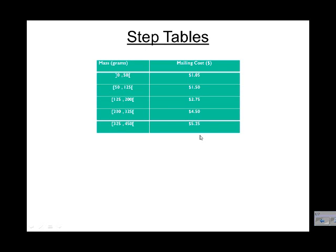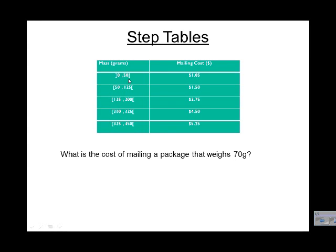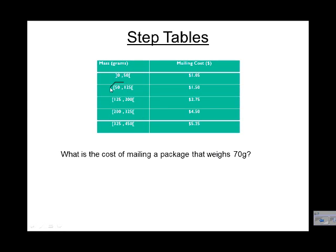Let's take a look at a table now. So again, what we notice in the table is rather than having singular values, we're having values that indicate a range or intervals. So what's the cost of mailing a package that weighs 70 grams? Well, if we look over here, we actually don't see 70 grams anywhere. So we have to figure out what value is 70 between? And we'll see it fits into here. It's between 50 grams and 125 grams. So the price will be $1.50.